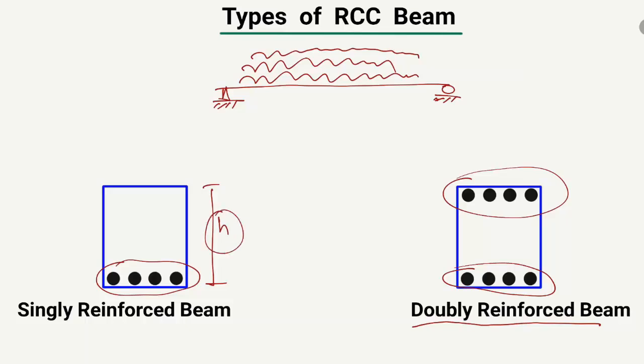With an increase in height we can increase the moment capacity, but when the height is restricted and we cannot increase it due to architectural or aesthetic reasons, we provide reinforcement in both the compression and tension zones to increase the moment capacity of the beam. This is the main reason why we provide reinforcement in the compression zone.